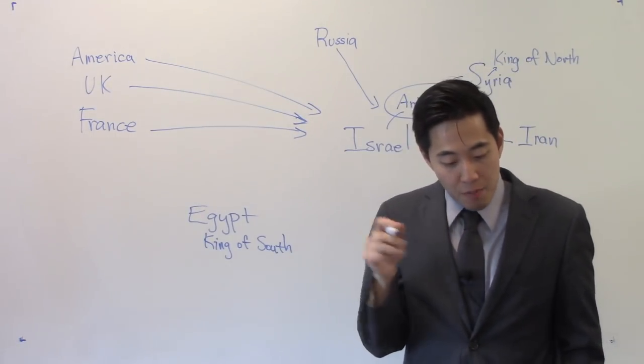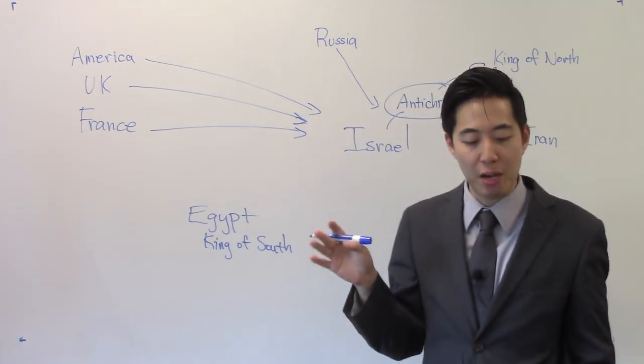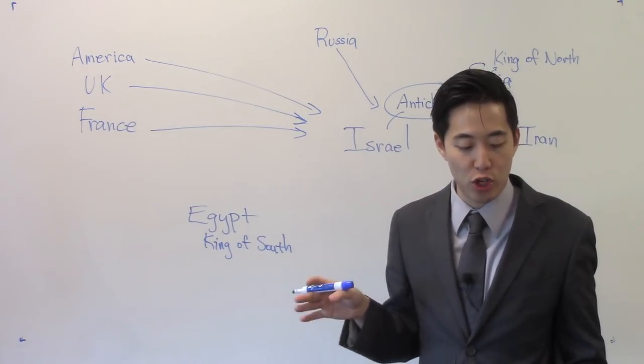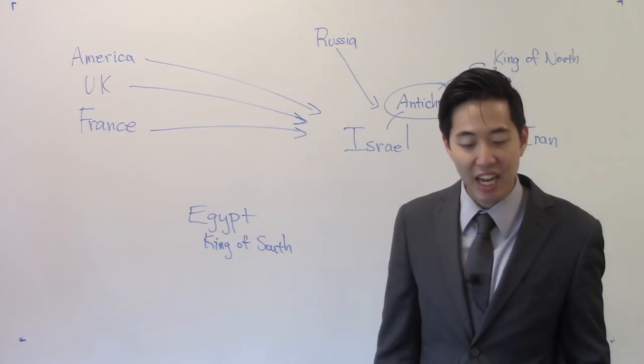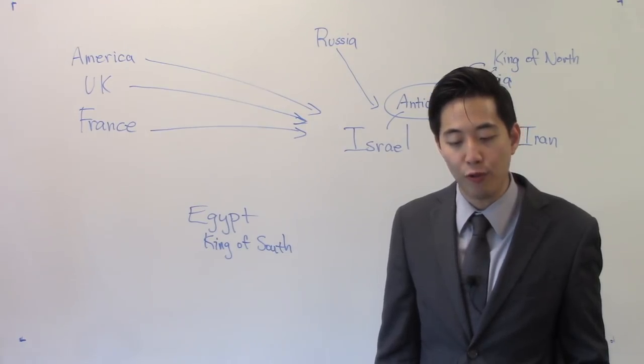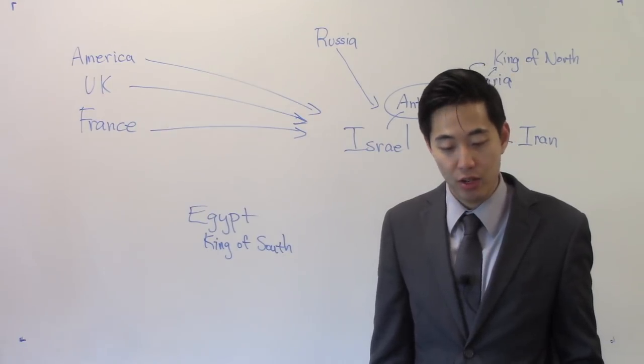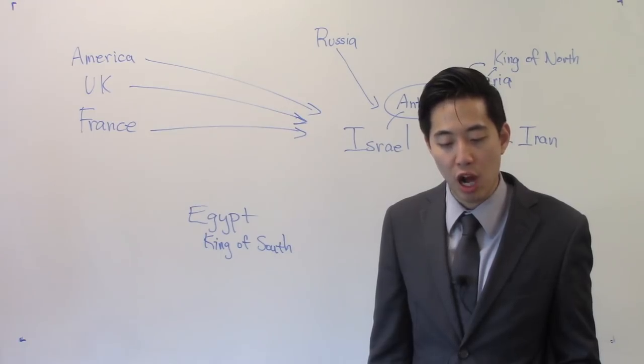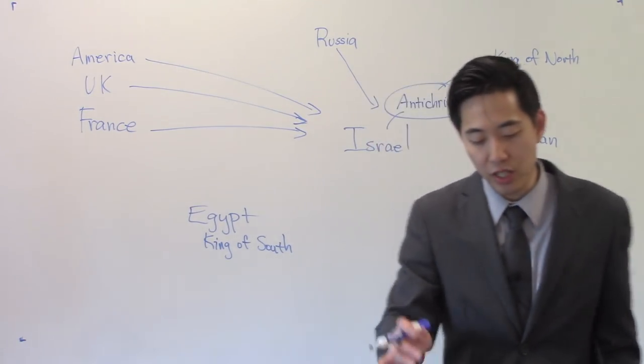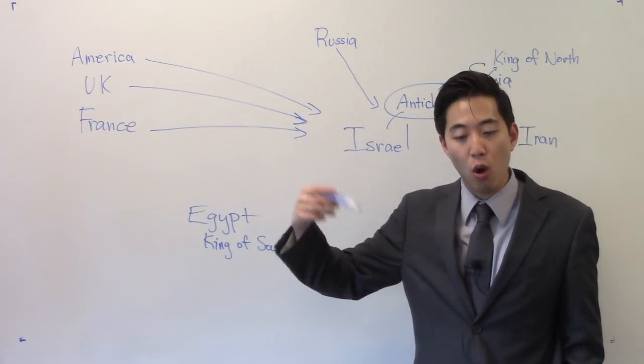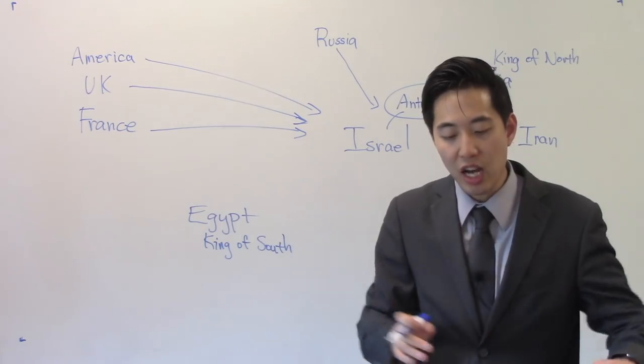This king of the north is Syrian. But look at verse 21. And in his estate, replacing that king of the north, someday this person is going to replace this king. Shall stand up a vile person. Now, did this already take place? No. You're going to find out it's future. A vile person to whom they shall not give the honor of the kingdom. But he shall come in peaceably and obtain the kingdom by flatteries. Look at verse 22. And with the arms of a flood shall they be overflown from before him and shall be broken. Yea, also the prince of the covenant. And after the league made with him, he shall work deceitfully. For he shall come up and shall become strong with the small people. He shall enter peaceably even upon the fattest places of the provinces.